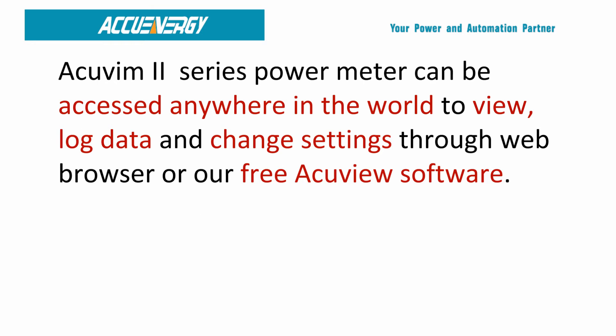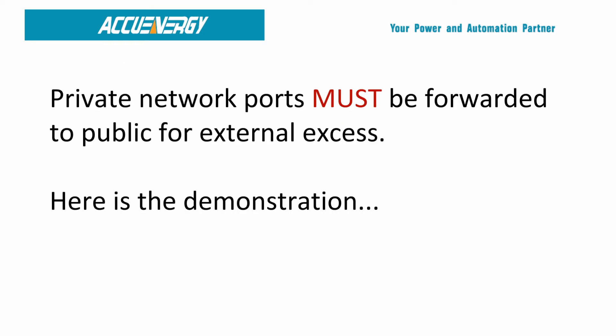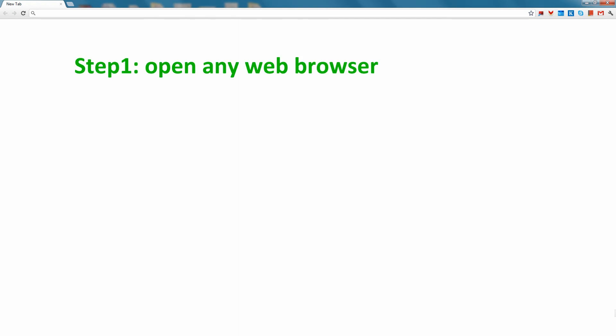To make full use of this function, the private network ports of the meter must be forwarded to public for external access. These operations require access to the router. In this demonstration, we are using a Linksys 2500 router. To begin, we first open any web browser, such as Internet Explorer or Firefox.